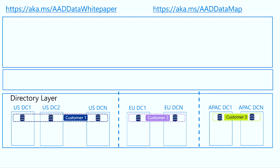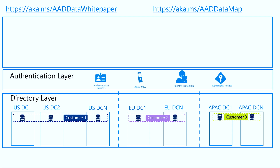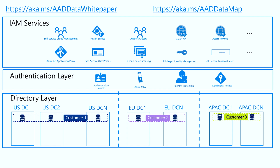The core store holds users, devices, conditional access policies — things that are essential to authentication. Everything you know about Azure AD features are basically components and services running on top of this core store. You have the authentication layer, which takes care of issuing tokens and enforcing policy. On top of that, the graph layer does directory queries and writes. Then you've got all the familiar features — self-service password reset, self-service group management, application proxy — all running in different data centers in Azure, but ultimately accessing the core store to do essential functions.